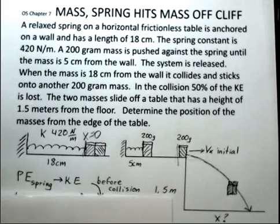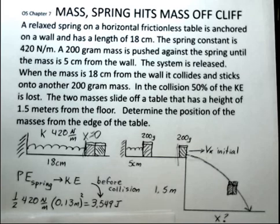So all the potential energy in the spring goes to kinetic energy of this 200 gram object. Then we have the collision. So let's analyze that. The potential energy will be 1/2 kx squared. The k value given is 420 newtons per meter. How did I come up with 0.13 meters for the compression distance?